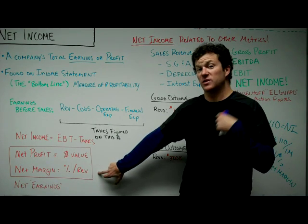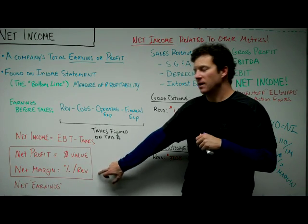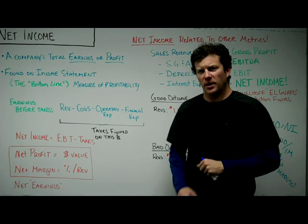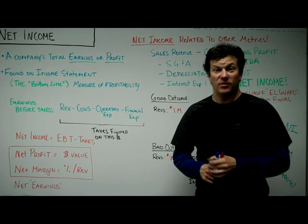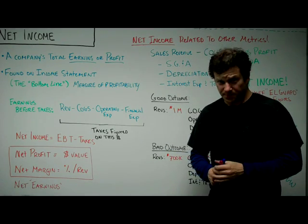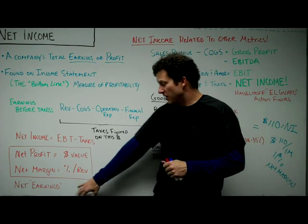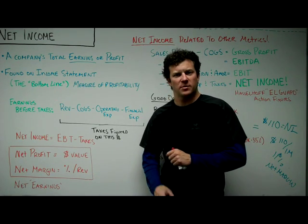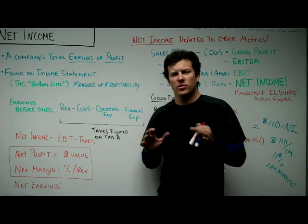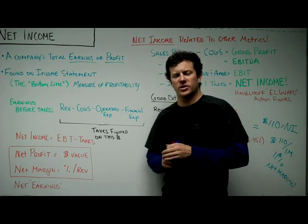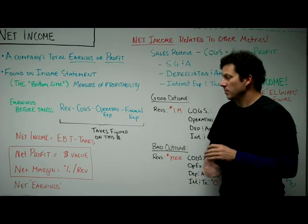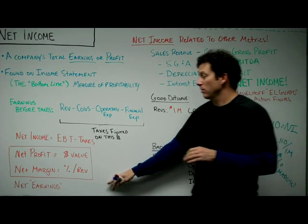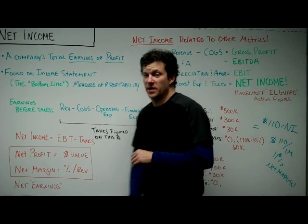If someone asks what your profit margin is, you'd say 7%. If someone asks how much profit you made last year, you'd say 70 grand. That's the only difference. They also sometimes refer to it as net earnings. So in financial conversations, keep an eye out for those uses around net income.